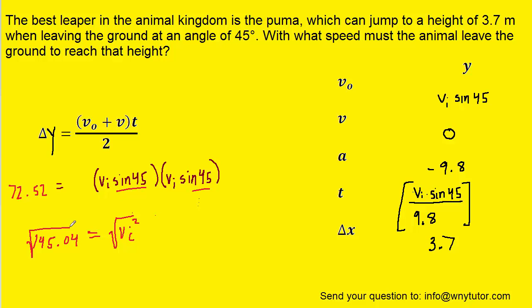And then finally, we can take the square root of both sides, and that changes the right side to v initial. And we finish off here with approximately 12 meters per second, which is indeed the correct answer.